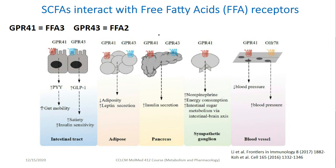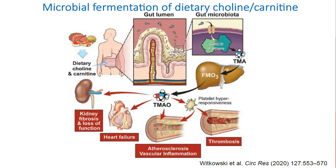Another example is microbial fermentation of dietary choline and carnitine, prevalent in Western diets. Gut microbes convert those compounds into TMA, trimethylamine, which is then oxidized by host FMO3 into TMAO. TMAO has been associated with cardiovascular disease in multiple clinical cohorts, and in animal models TMAO enhanced platelet hyperresponsiveness, accelerated atherosclerosis, and vascular inflammation, and led to heart failure and kidney fibrosis. Importantly, by inhibiting the gut microbial enzyme product of the CutC gene involved in converting choline and carnitine into TMA and TMAO, it was possible to inhibit many of these phenotypes in animal models.